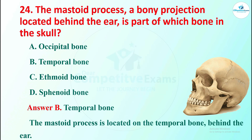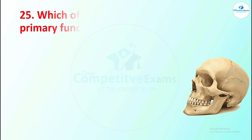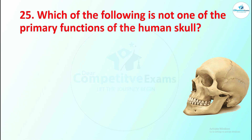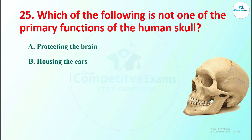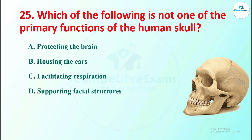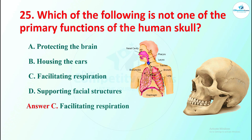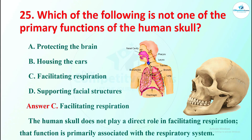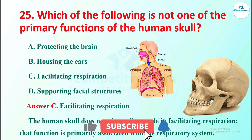Question 25: which of the following is not one of the primary functions of the human skull? Options are protecting the brain, housing the ears, facilitating respiration, or supporting the facial structures. The correct answer is facilitating respiration. The human skull does not play a direct role in facilitating respiration; that function is primarily associated with the respiratory system.